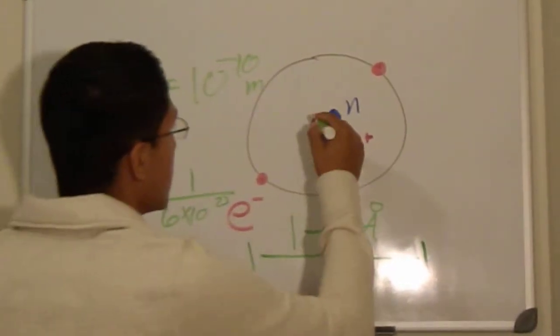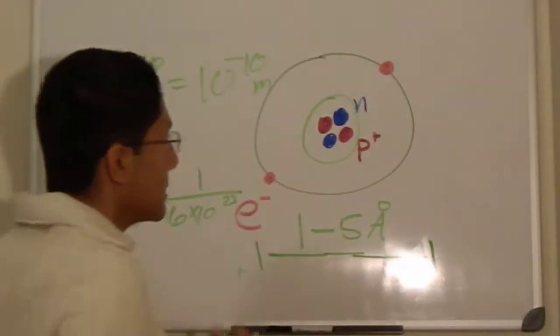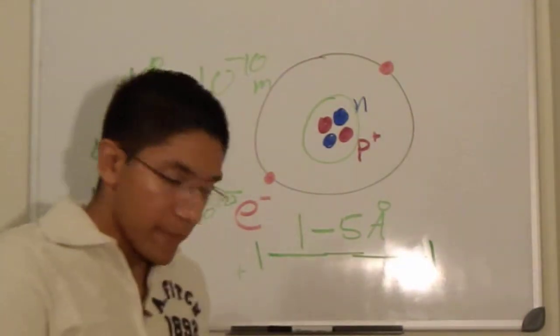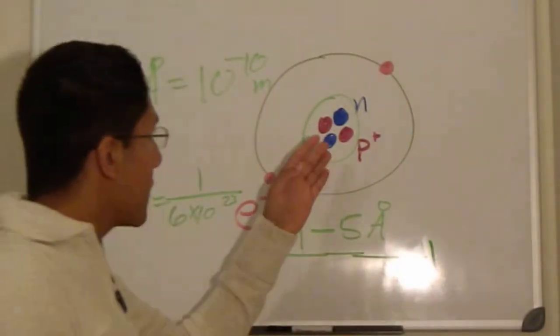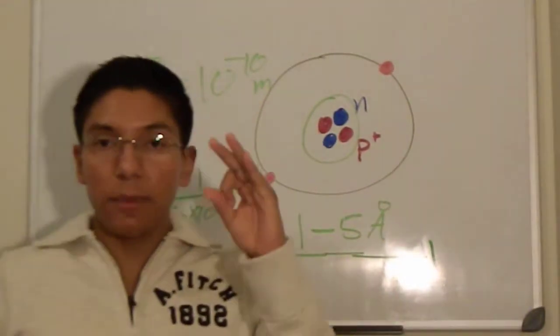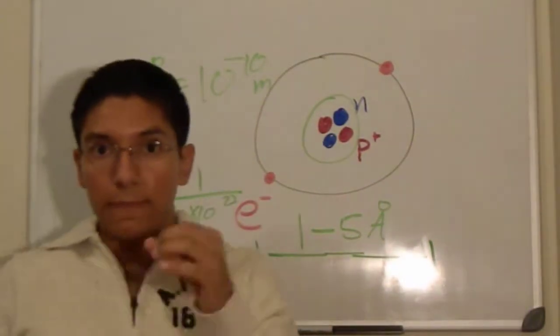And I can actually give you an example. If the atom was the size of a football field, then the nucleus would be about the size of a marble in the middle of the field.